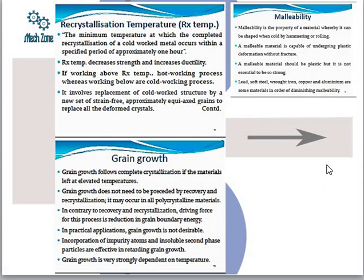Recrystallization temperature is the temperature at which grains start to grow — specifically, the minimum temperature at which complete recrystallization of a cold-worked metal occurs within approximately one hour. If our working is above the recrystallization temperature, it is called hot working. If we are working on metal forming below the recrystallization temperature, it is called cold working.